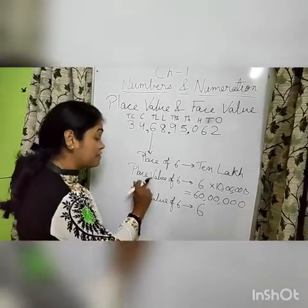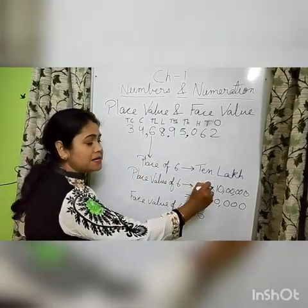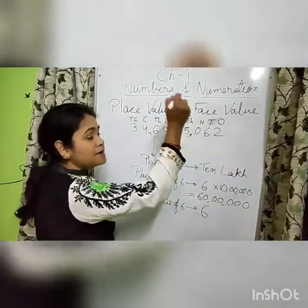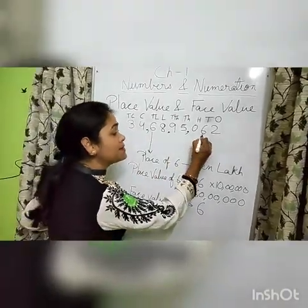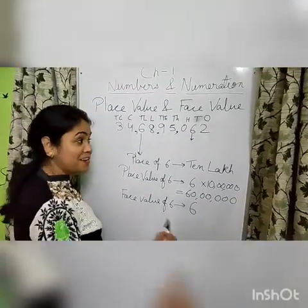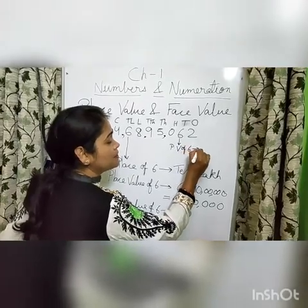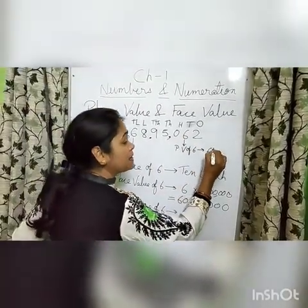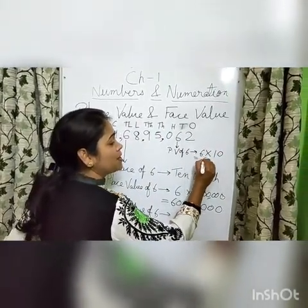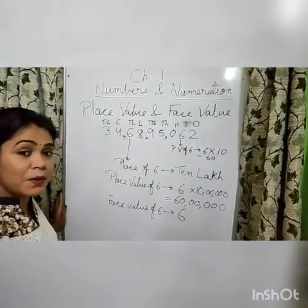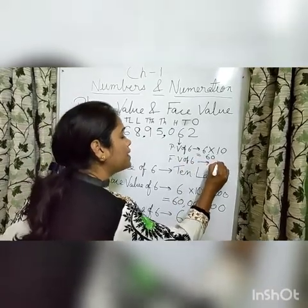But place value changes according to place. If it is in the lakhs place, its value is the number multiplied by lakh. If it is in the hundreds place, its value is the number multiplied by hundred. For example, take this 6 — what is its place value? Number multiplied by its place. Its place is the tens place, so its place value is 60. But its face value is the number itself — 6.